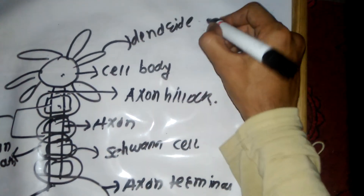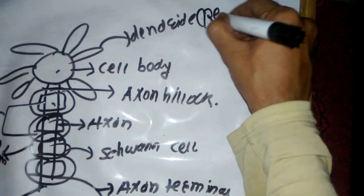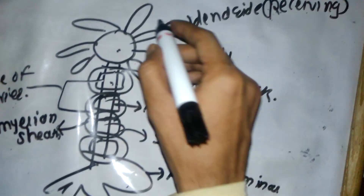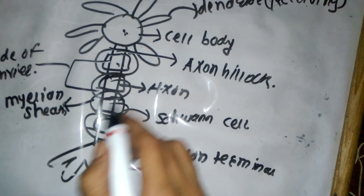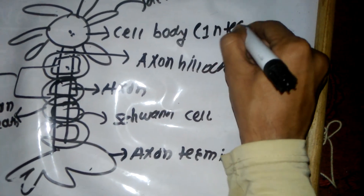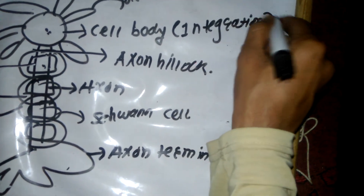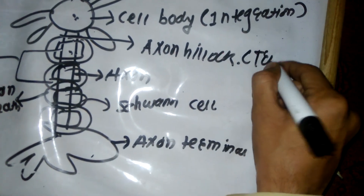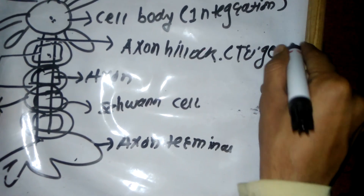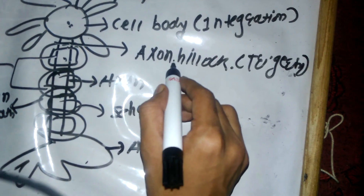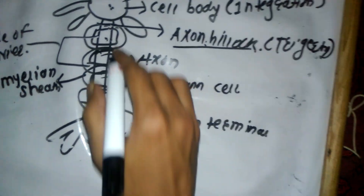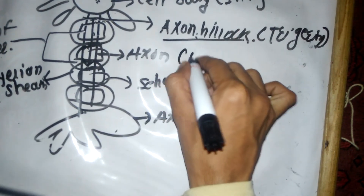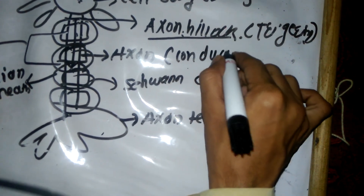Starting with the dendrite — what is the function of the dendrite? The dendrite receives the signal, and this signal goes into the cell body where integration of the signal takes place. After that, the triggering of that signal takes place in the axon hillock. Then the signal travels into the axon, and conduction of the signal takes place in the axon.